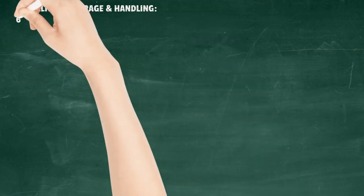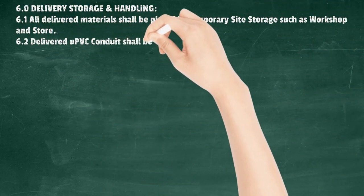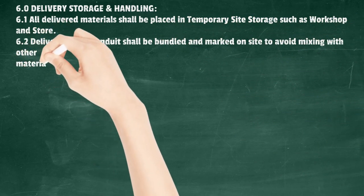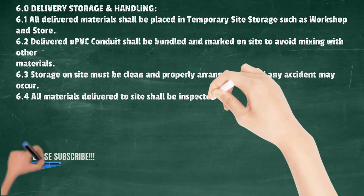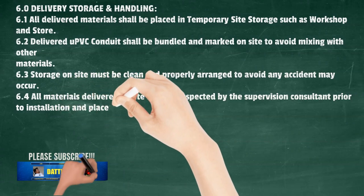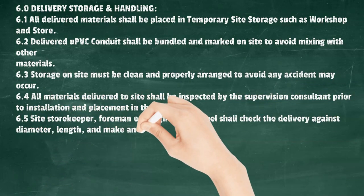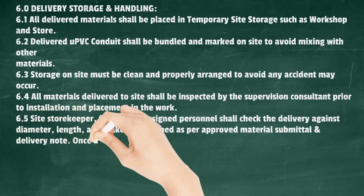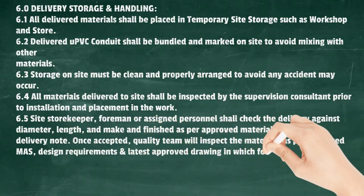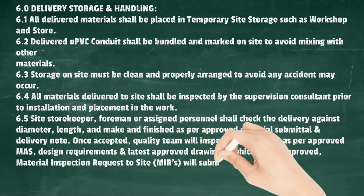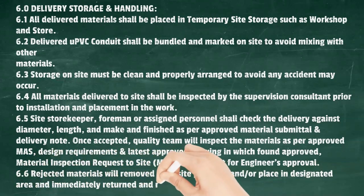Delivery, Storage and Handling: All delivered materials shall be placed in temporary site storage such as a workshop and store. Delivered UPVC conduits shall be bundled and marked on site to avoid mixing with other materials. Storage on site must be clean and properly arranged. All materials delivered to site shall be inspected by the supervision consultant prior to installation. The storekeeper, foreman, or assigned personnel shall check delivery against diameter, length, make and finish as per approved material submittal and delivery note. Once accepted, the quality team will inspect materials and submit an approved material inspection request for engineer approval. Rejected materials shall be removed from site and returned or replaced by the supplier.